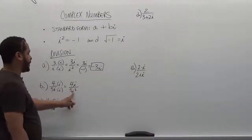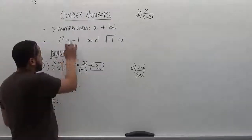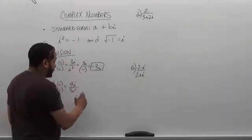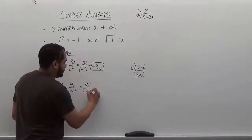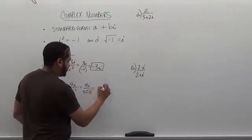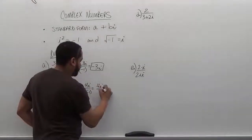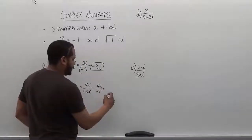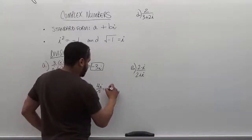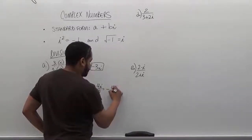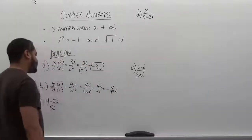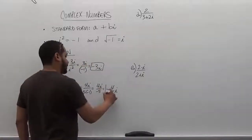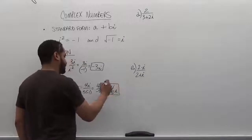This gives us 4i on top, and on the bottom we get 5i squared. Remembering that i squared represents negative 1, we have 4i divided by 5 times negative 1, which is negative 5. So we have 4i divided by negative 5, and the negative moves up — we get negative 4 over 5 i. That's our solution.